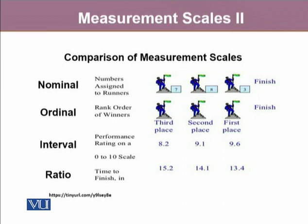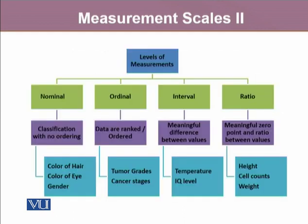Lastly, time to finish is a ratio scale. We can clearly see that 15.2 minutes is higher than a finish time of 14.1 or 13.4. One thing to note is that in an ordinal scale — first, second, or third place — the gaps between values do not necessarily have equal intervals. The difference between first and second place does not have to be the same as between second and third. But in the ratio scale, we can clearly see that the person who arrived at 13.4 minutes ran faster than those finishing at 14.1 and 15.2.